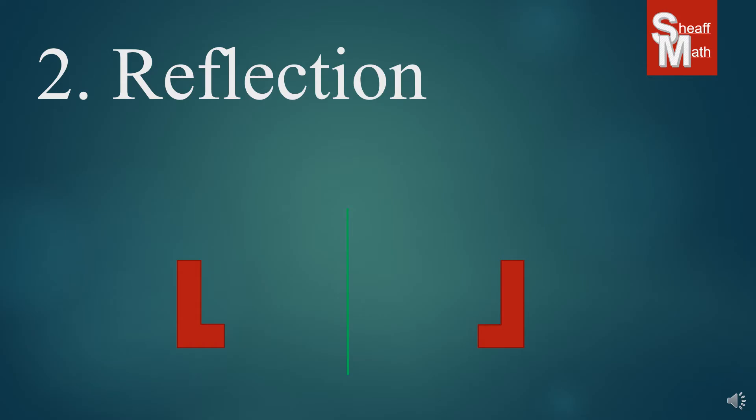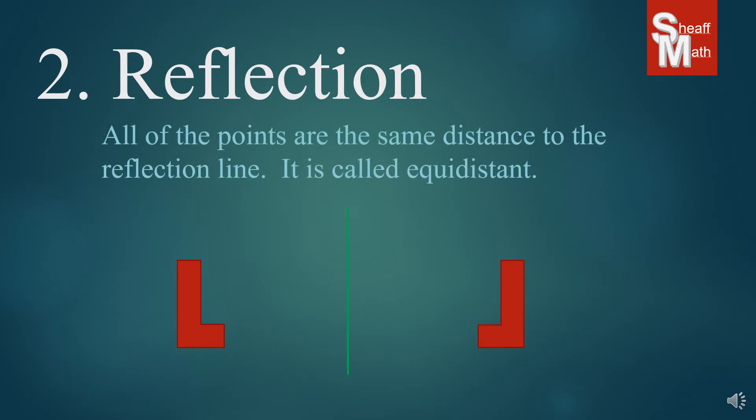Now, one of the other keys to note is that all of the points on the two figures are the same distance to the reflection line. So if you notice, they are exactly the same distance away from that mirror. We call that equidistant.